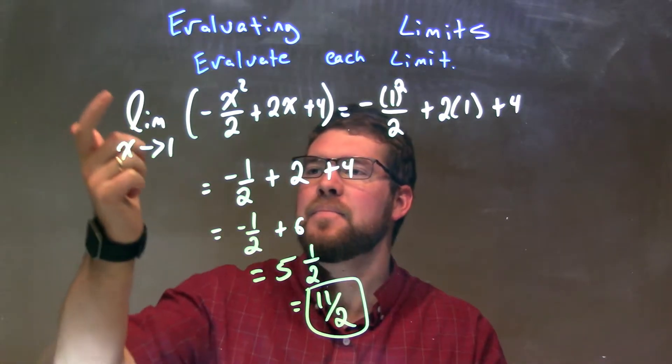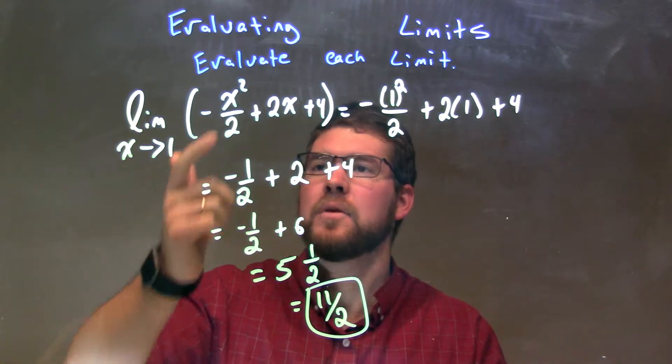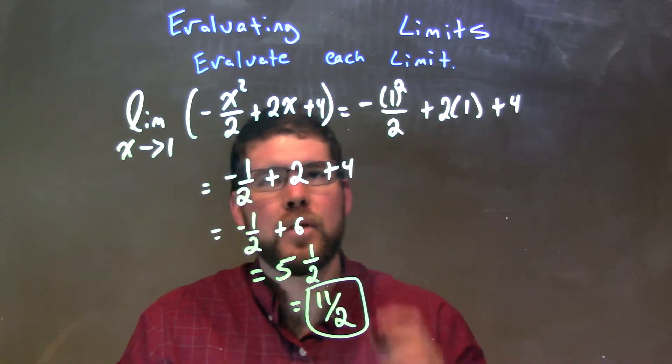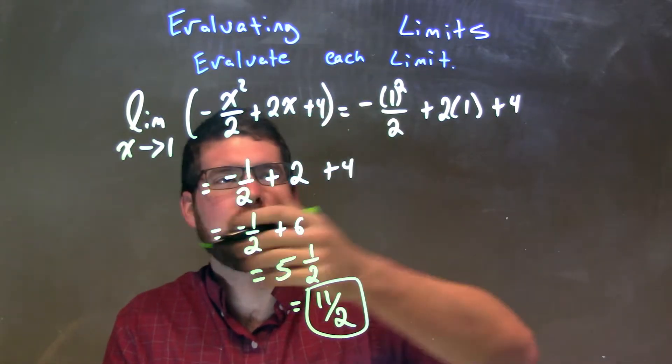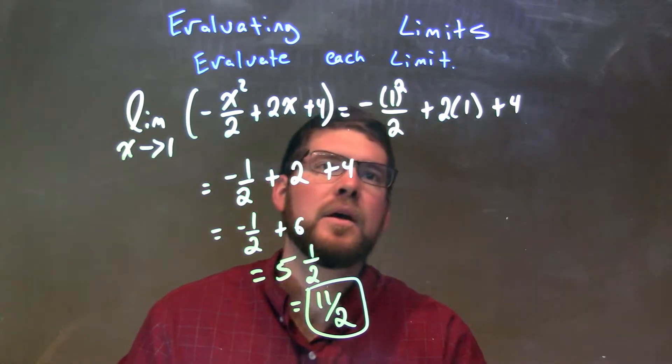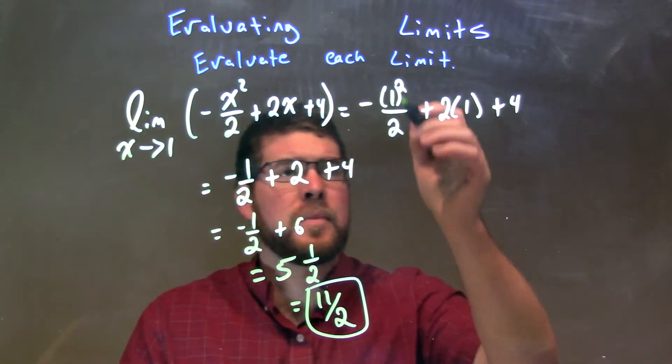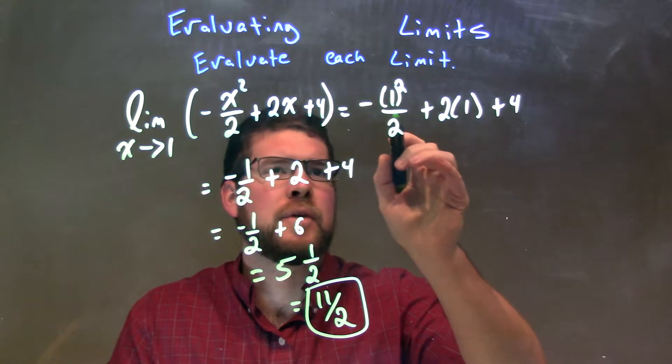So, let's recap. We're given a limit as x approaches 1 of negative x squared over 2 plus 2x plus 4. We have a polynomial here, so we can directly substitute 1 in for x. So 1 goes for x there, for both x's, and we simplify.